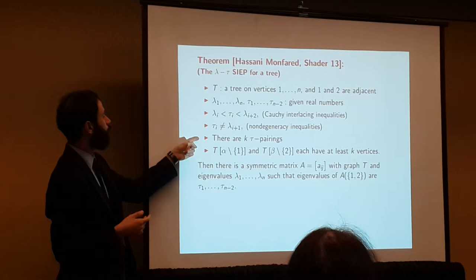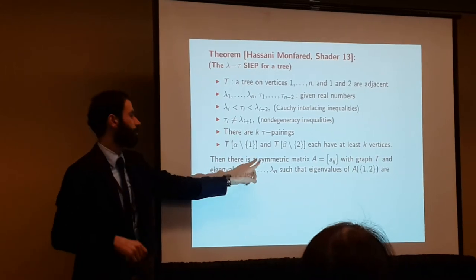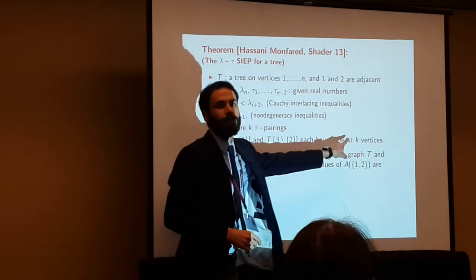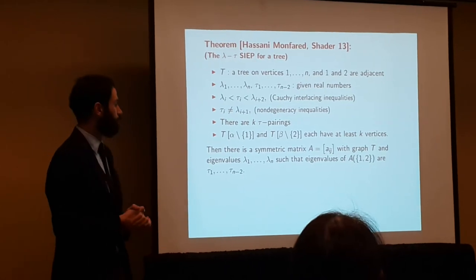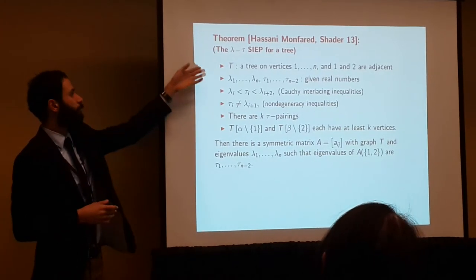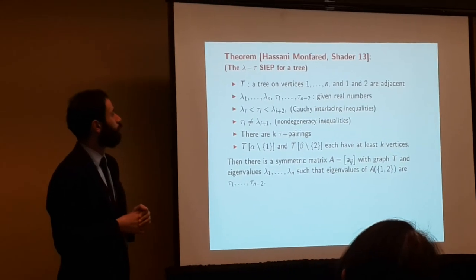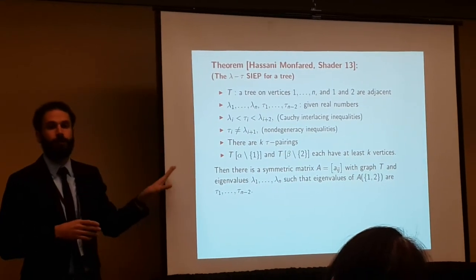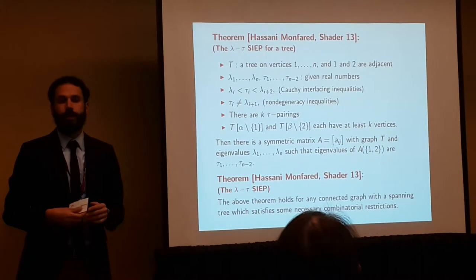That's the restriction I took on my tree. The left-hand side of the tree and the right-hand side of the tree - t left-hand side deleting vertex one, t right-hand side deleting vertex two - each of them should have at least k vertices when I have k tau pairings. Otherwise, it's not going to happen. We are not going to be able to solve that problem. There is no solution. If all of these are satisfied, then we get the real symmetric matrix that has eigenvalues lambda_i. When I delete two vertices, one and two, then we get eigenvalues tau_1 through tau_{n-2}. Again, here, this proof is just combinatorial. We are not using any Jacobian method, but then we extend this to any connected graph.